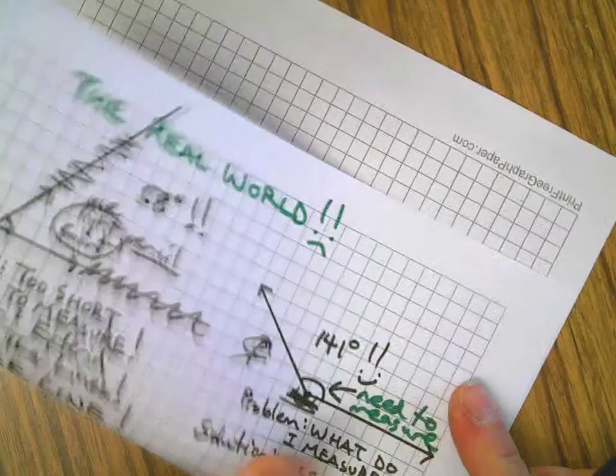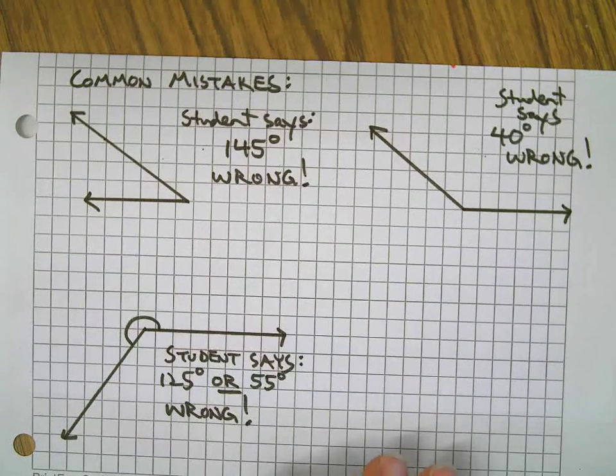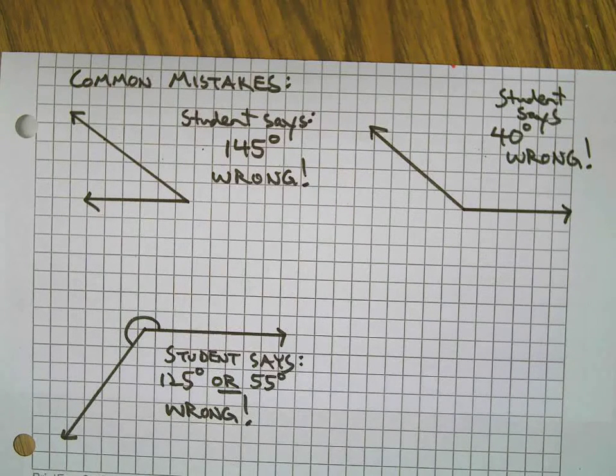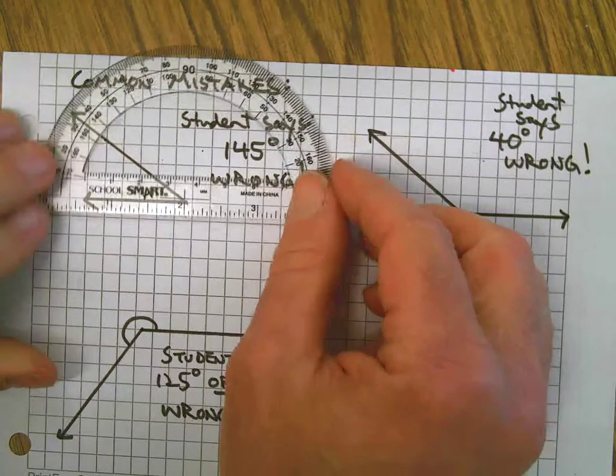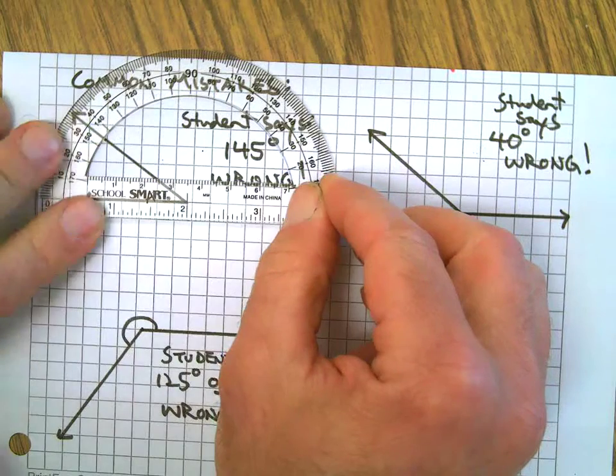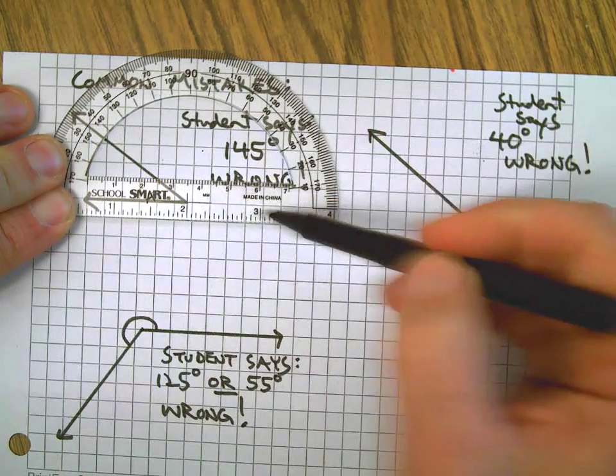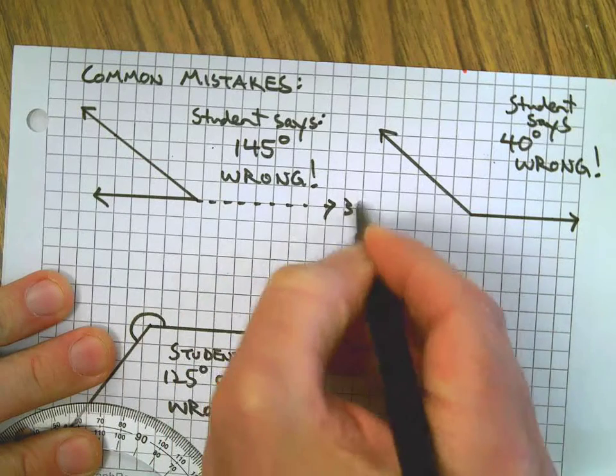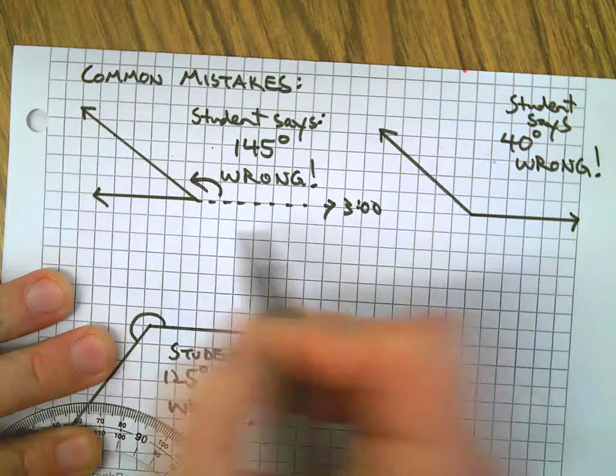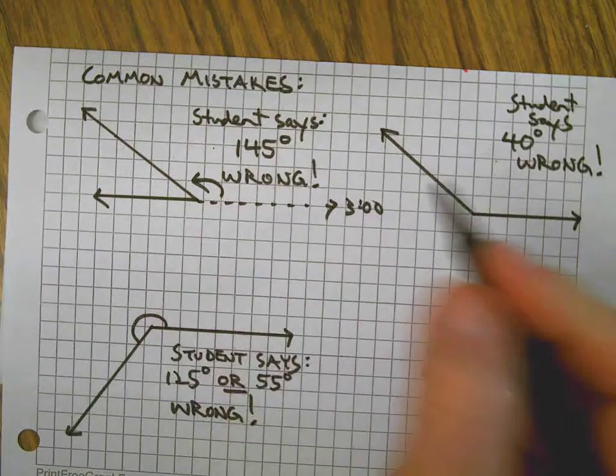Let's look at some common mistakes made by real students in the real world. Here's an angle - student says 145 degrees. Sorry, that one's wrong. First let's understand why it's wrong. Here's what this student did: they put the vertex in the crosshairs, very good, but they assumed we're in the perfect world a little bit too much.